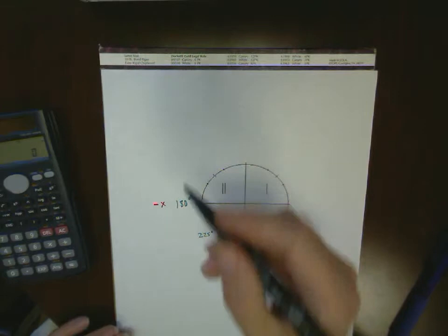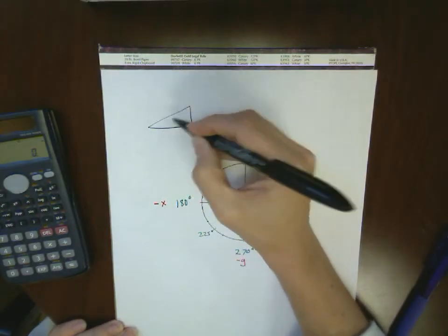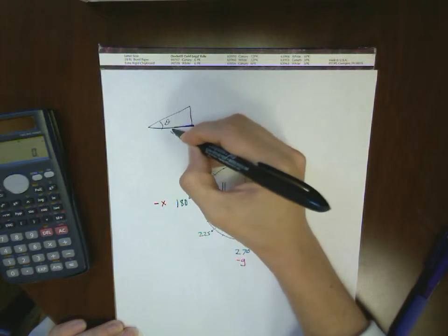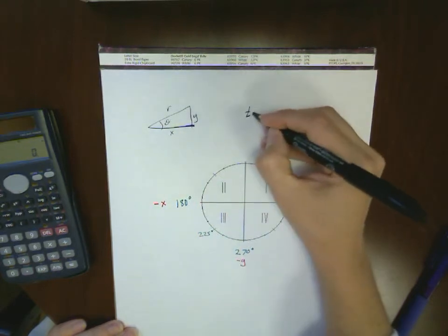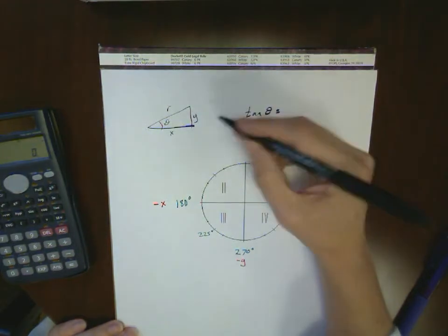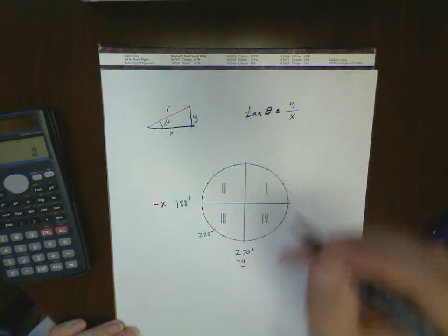Again, when we defined our original trig formulas, we had a triangle that was over here in the first quadrant, in which case we had the relationship of tangent theta was equal to the opposite over the adjacent, which is y over x.